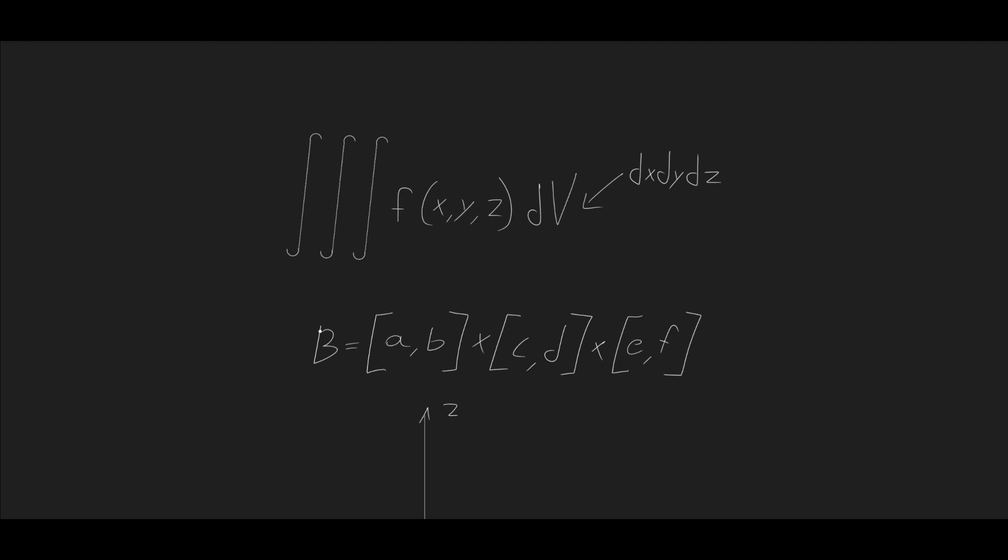And b, our bounds, in this video, are going to be constant. So, we're going to be integrating over a box, because our bounds are constant, and this will form a box in three dimensions. a, b are our bounds for x, c and d are for y, and e and f are for z.